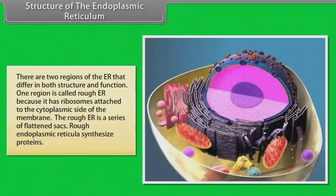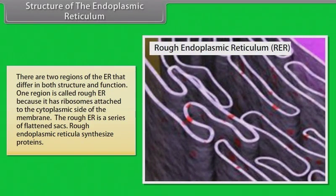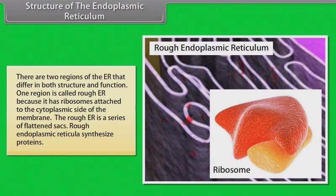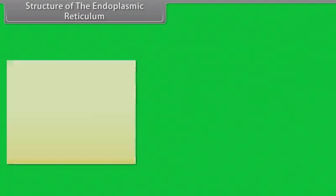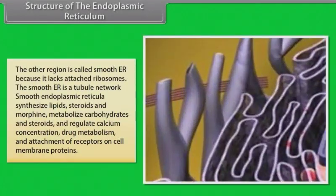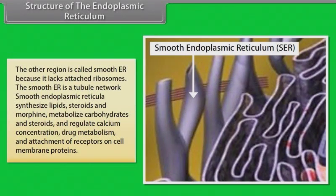There are two regions of the ER that differ in both structure and function. One region is called rough ER because it has ribosomes attached to the cytoplasmic side of the membrane. The rough ER is a series of flattened sacs, and rough endoplasmic reticula synthesize proteins. The other region is called smooth ER because it lacks attached ribosomes. The smooth ER is a tubule network.